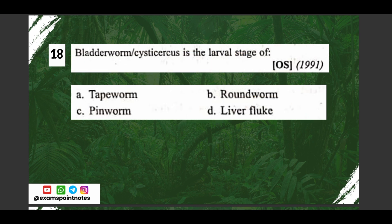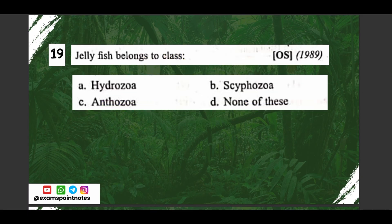Question number eighteen: bladderworm or cysticercus is a larval stage of — A) tapeworm, B) roundworm, C) pinworm, D) liver fluke. The correct option is option A, tapeworm.